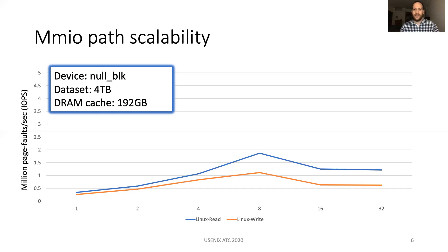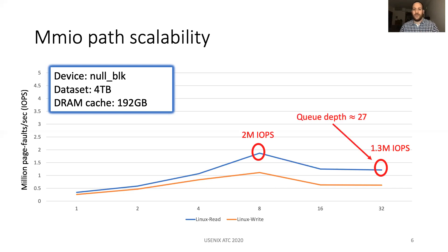In the case of 8 threads, it achieves 2 million I/Os. In the case of 32 threads, it achieves only 1.3 million I/Os. Today, there are devices on the market capable of even more I/Os. Fast storage requires a large number of outstanding I/Os to achieve high device throughput. In the case of 32 threads, we measure that the average queue depth is about 27, which is less than 32, the ideal in this case.